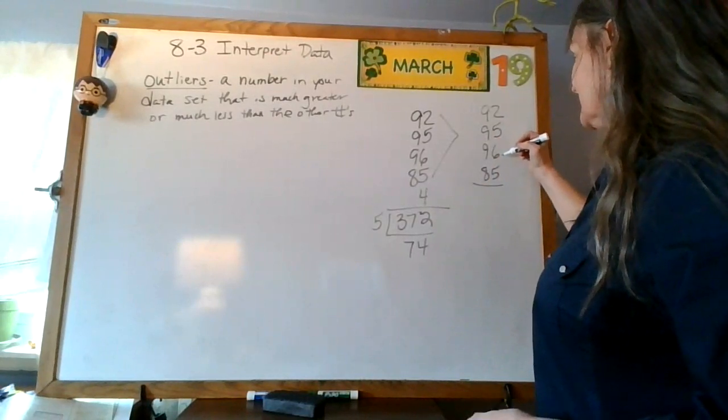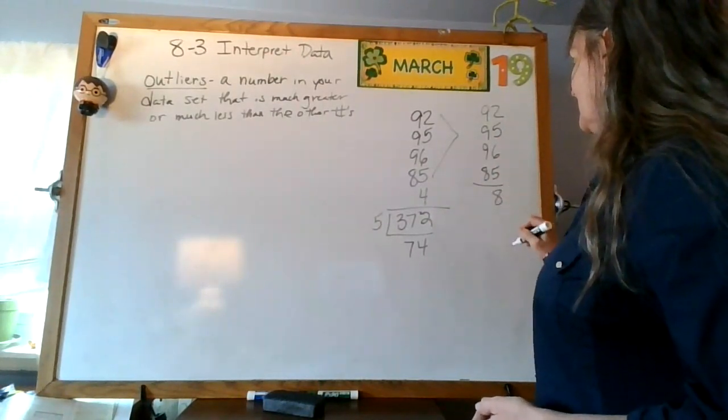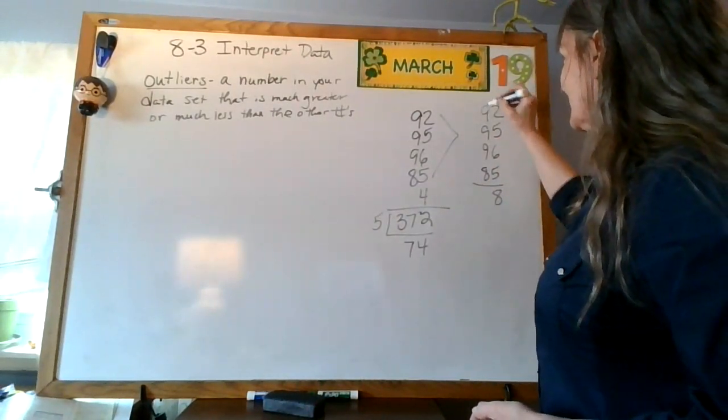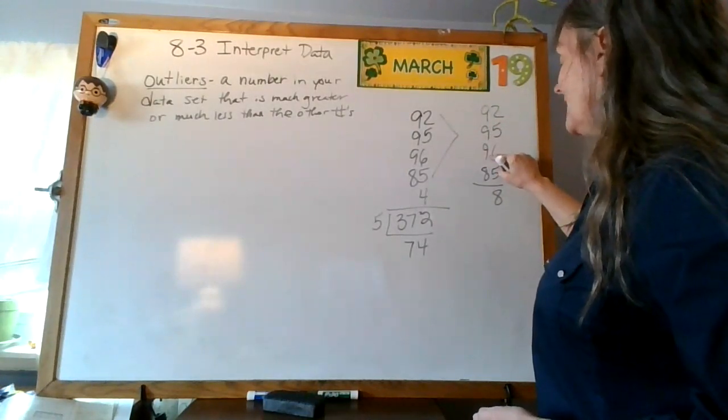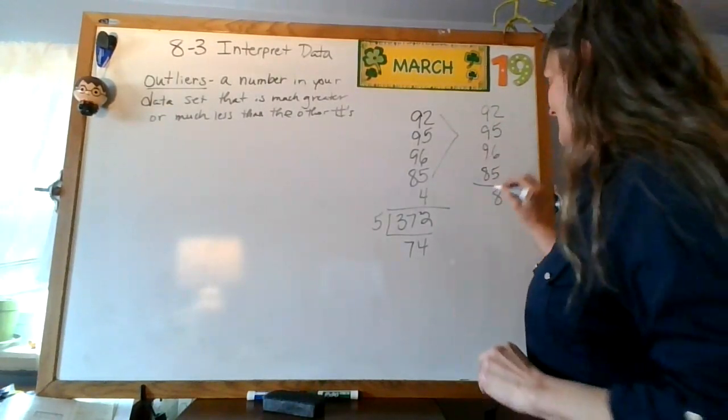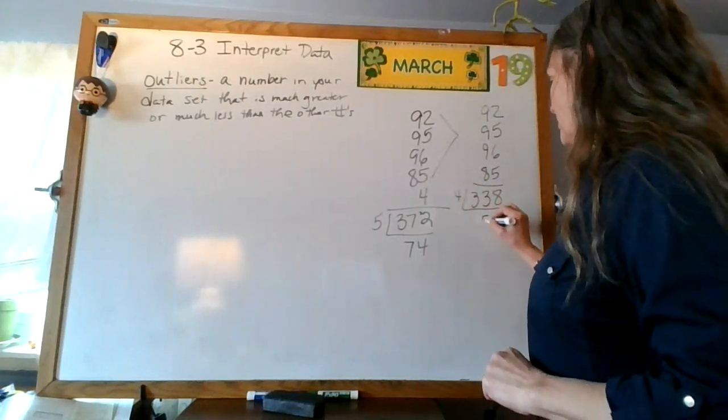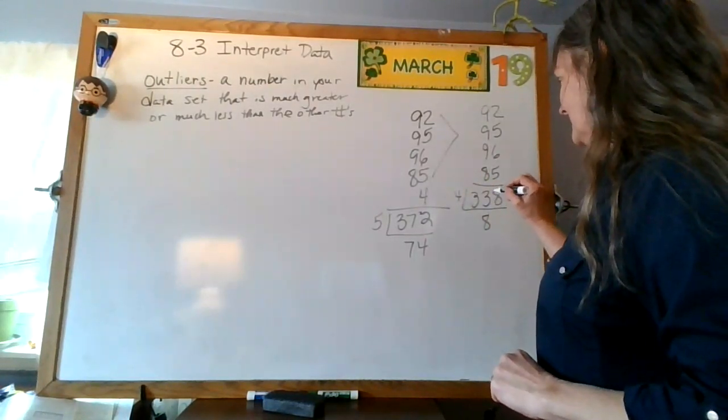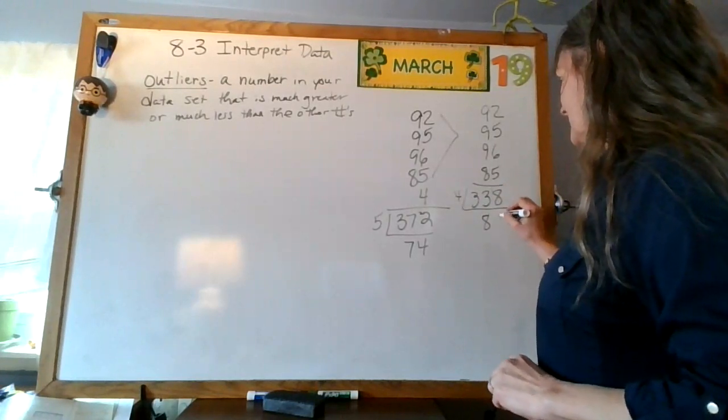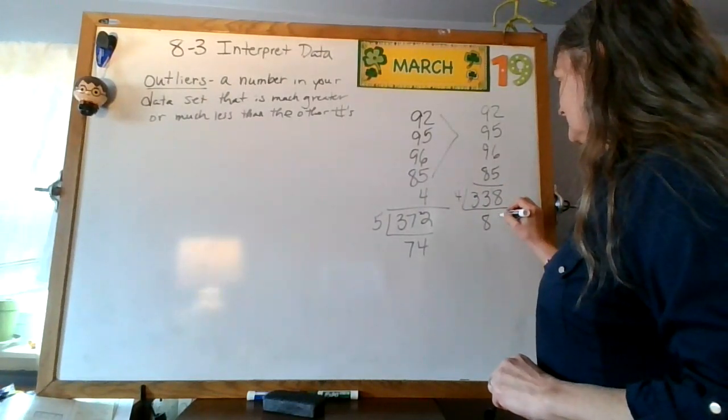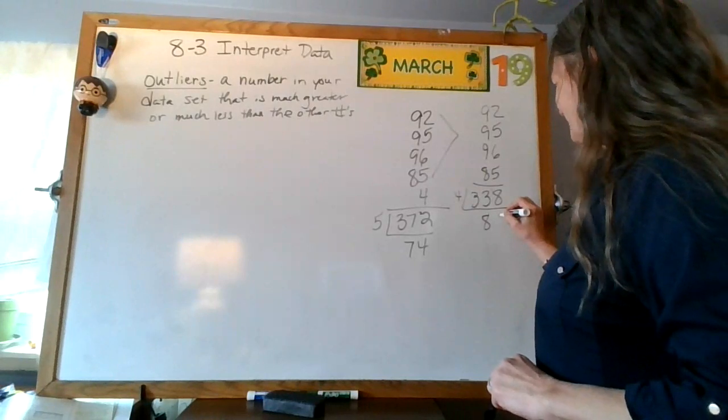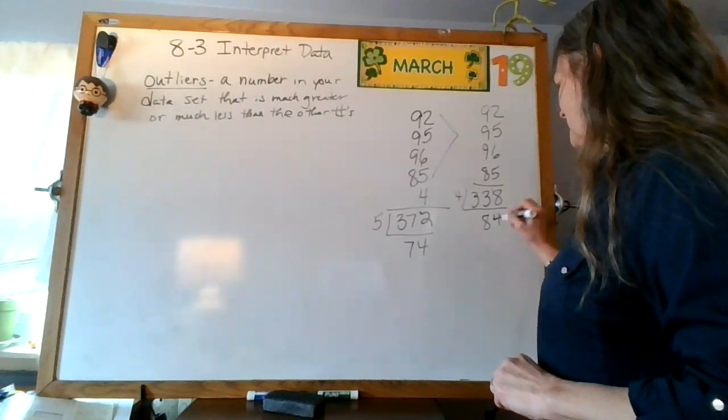5 and 2, 7, plus 6 is 13, 18, so that's 19, and 17, 33. Divide that by 4, that gives me 4 into 18 is 3, 4, about 84.